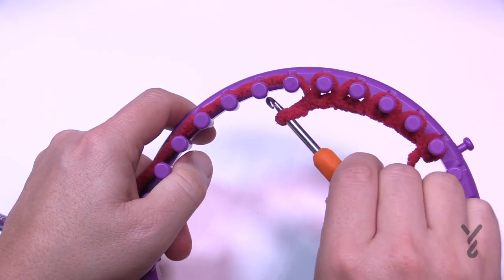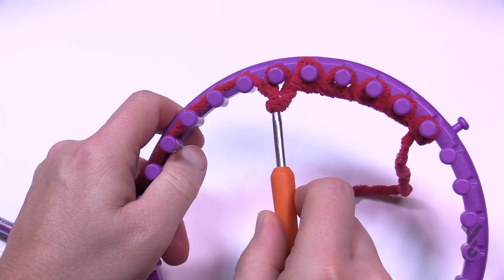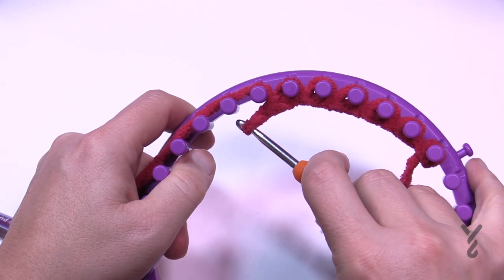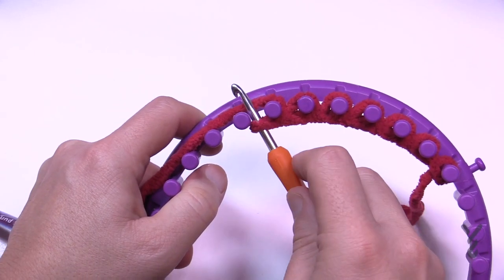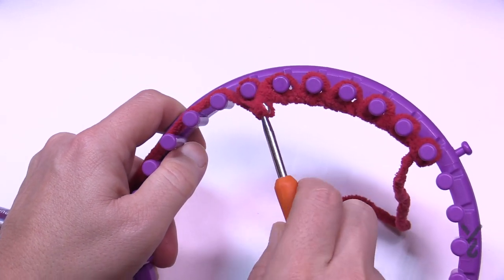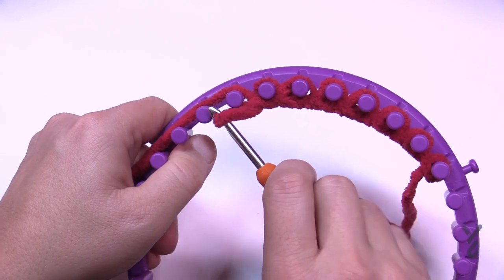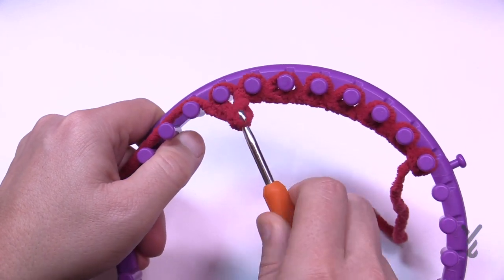You can decide to do this method or the e-wrap cast on, it's up to you. Once you get used to this concept it's actually not hard. This is how you do a cast on using a crochet hook. It's called the chain cast on and I'll see you again next time.